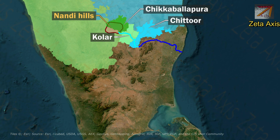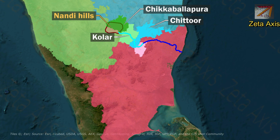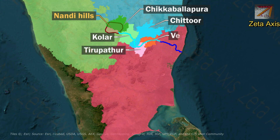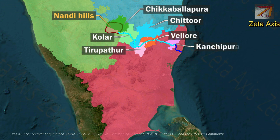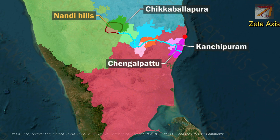Finally, it enters Tamil Nadu. In Tamil Nadu, it flows through Tripathuru, Vellore, Ranipet, and Kanchipuram district before it flows into the Bay of Bengal in Chengalapattu district, just south of Chennai.